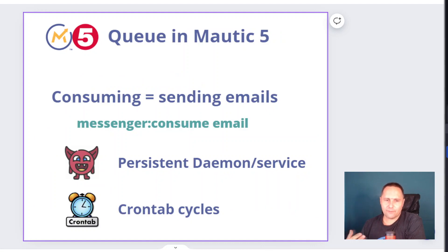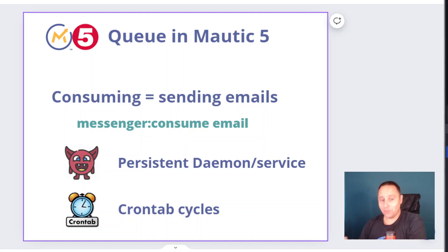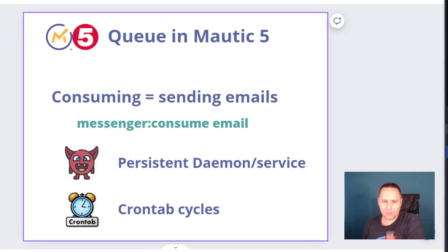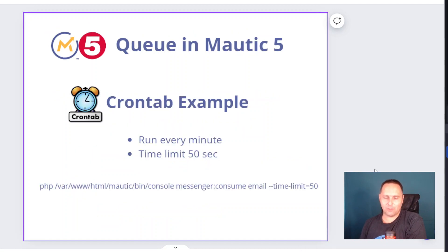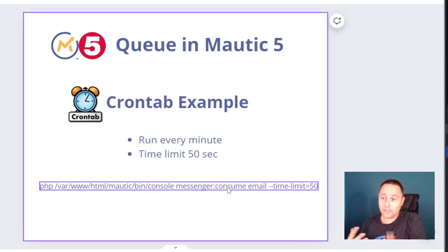The queue itself is consumed by a new function in Mautic and in the underlying system, which is Symfony. You're not saying you're 'sending emails' — you are 'consuming the transport.' So we have to use the command called 'messenger:consume email' in order to send it out. We can do this with a persistent daemon service or crontab cycles. Let me explain — starting with crontab, since you probably know it if you're coming from Mautic 4. You can run it every minute; the difference from Mautic 4 is that if you run the command 'messenger:consume email,' it will run without an end.